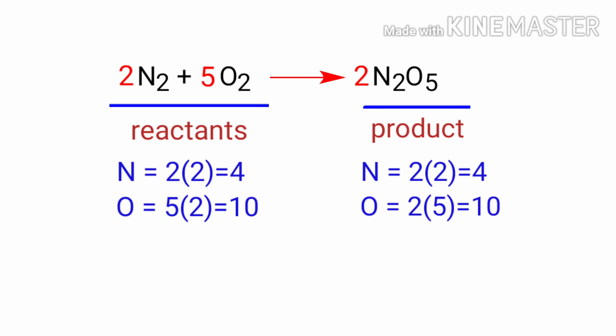The equation is now balanced. There are four nitrogen atoms and ten oxygen atoms on both sides.